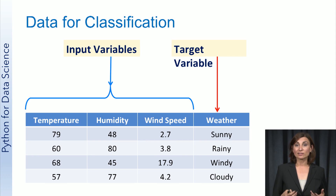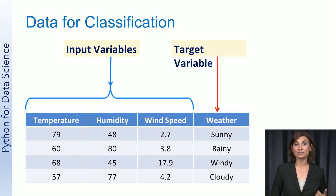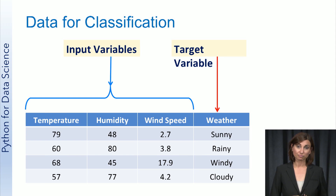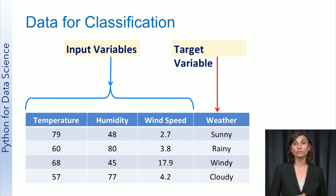This is what the dataset might look like for the weather classification problem. Each row is a sample with input variables temperature, humidity, and pressure, and target variable weather. Each row has specific values for the input variables and a corresponding value for the target variable. The classification task is to predict the value of the target variable from the values of the input variables.